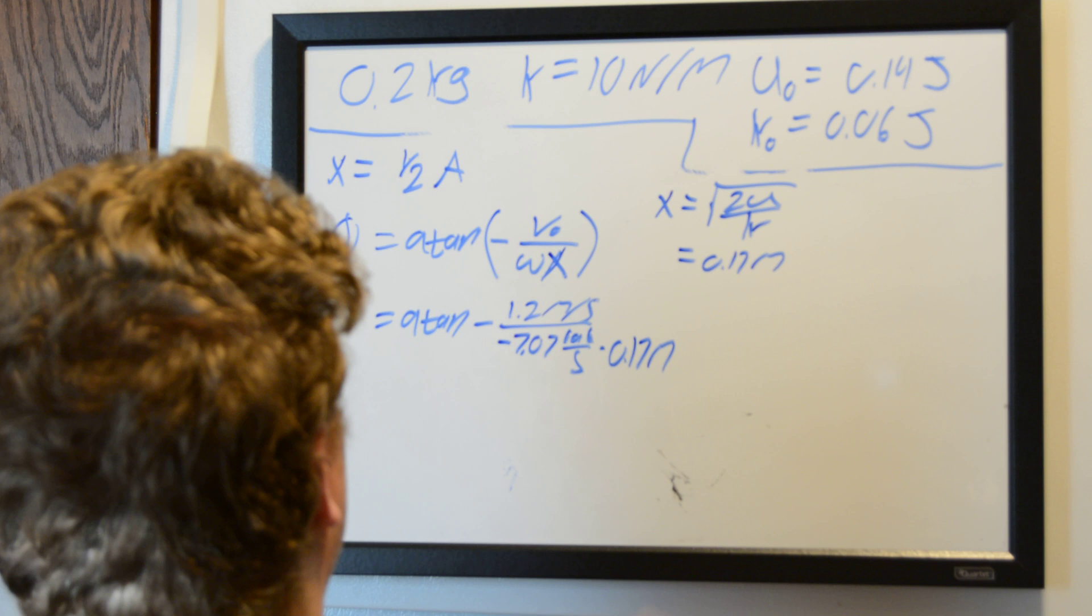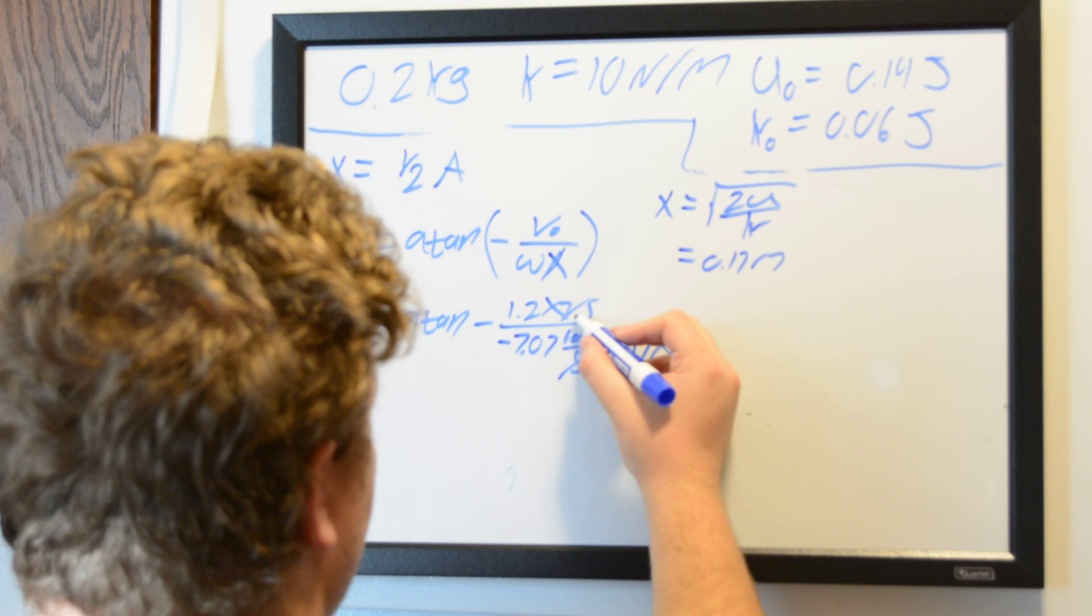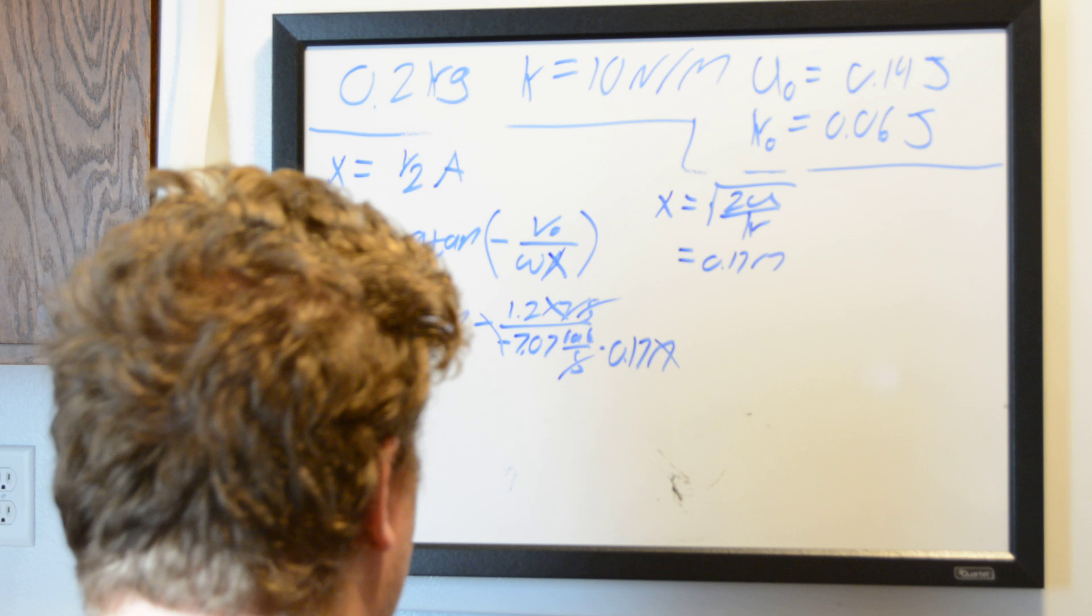So in this problem, our meters cancel out. Our seconds cancel out. These two negatives become a positive, contrary to what we learned in Sunday school.